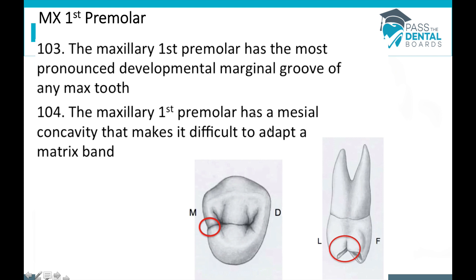The maxillary first premolar has a mesial concavity that makes it difficult to adapt a matrix band. These are actually two different things: we have the developmental groove that carries on over to the mesial, and then there's a depression — a concavity. So if you were to go underneath this mesial marginal ridge, you'd have a little concavity in there that could make it difficult to adapt the matrix band.